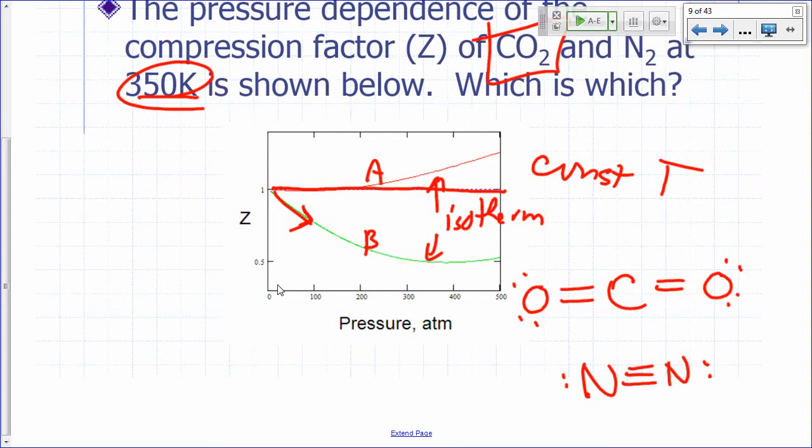And so, you have stronger attractive forces among carbon dioxide molecules as opposed to nitrogen molecules simply because of its size. There's no dipole-dipole interaction here. Neither one of these is polar. There's no hydrogen-bonding interaction. So, the only source of intermolecular attractions here would be London dispersion forces.